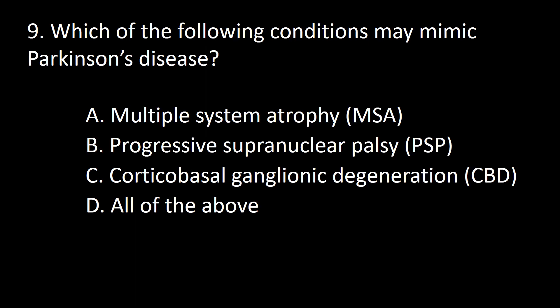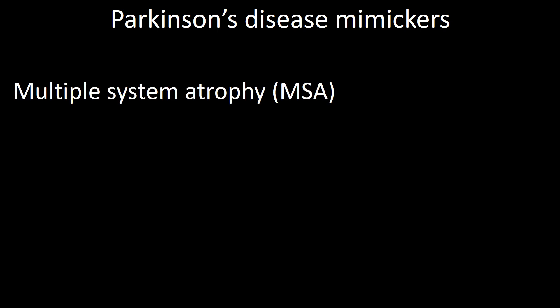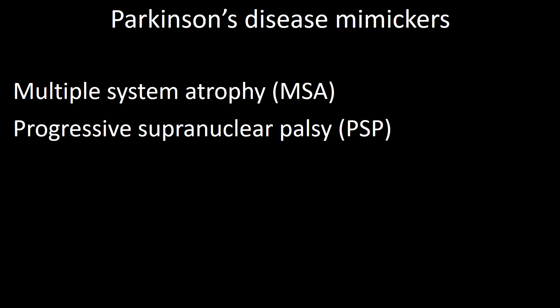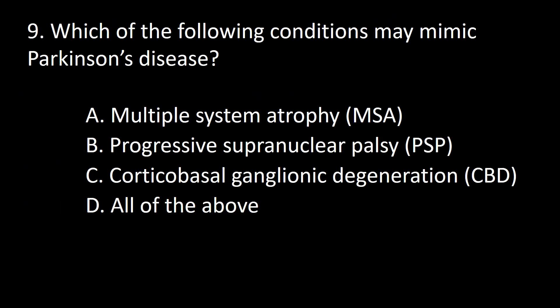Next question: Which of the following conditions may mimic Parkinson's? A, multiple system atrophy; B, progressive supranuclear palsy; C, corticobasal ganglionic degeneration; D, all of the above. The third group we must consider are Parkinson's disease mimickers. We will discuss four conditions: multiple system atrophy, progressive supranuclear palsy, corticobasal ganglionic degeneration, and Wilson's disease. So the answer is D.